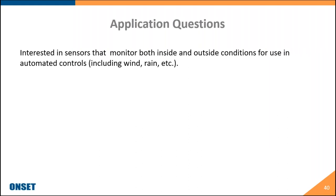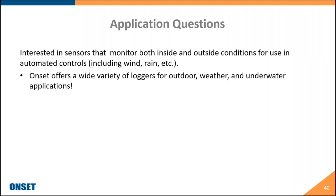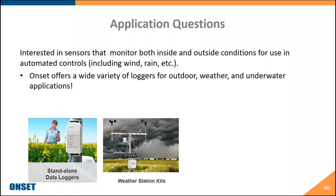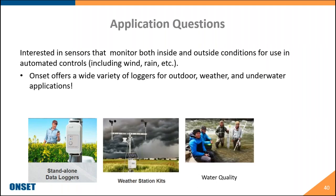Monitoring indoor parameters often requires taking outdoor measurements to see how the two correlate. ONSET offers wide-ranging data loggers for indoor applications as well as solutions for outdoor and water applications. We have standalone outdoor data loggers, outdoor weather stations, and water quality data loggers. Monitoring outdoor conditions alongside indoor parameters helps answer questions like: if it's cold outside, is my HVAC system functioning properly or working too hard? In the summer, when it's very hot outside, how hard is the air conditioning unit working?